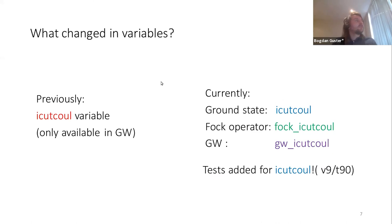What changed in terms of variables: previously we had methods available at the GW level already implemented in ABINIT using the variable icutcoul. Now we've changed this situation by maintaining icutcoul at the ground state level and creating the other two variables at the Fock operator level and the GW operator level.